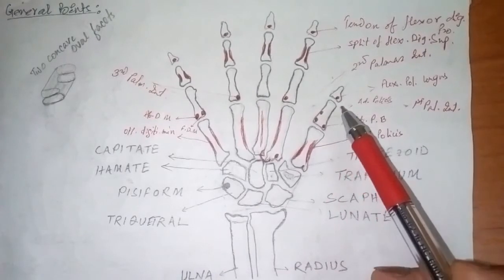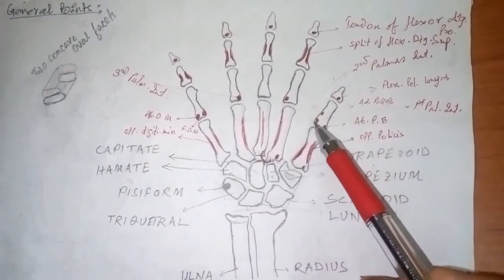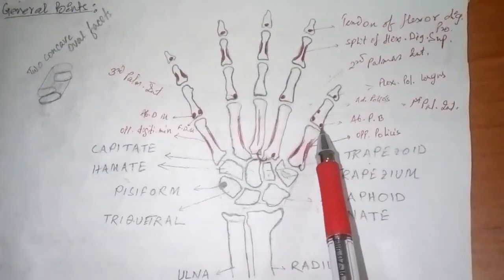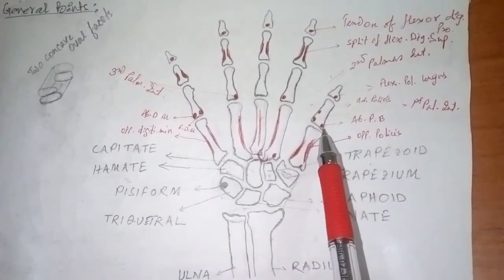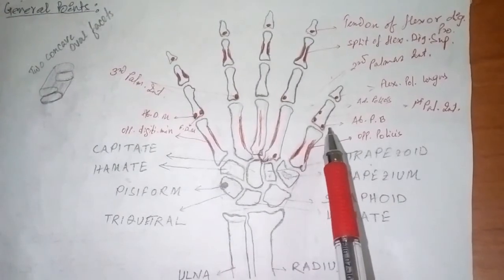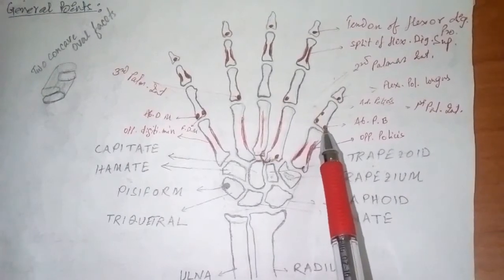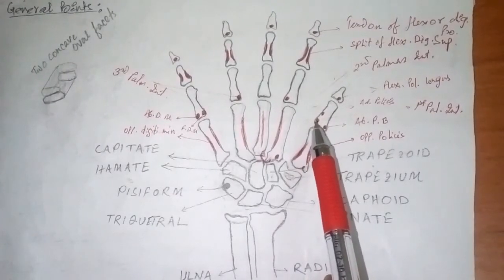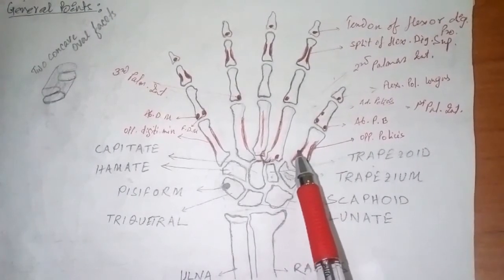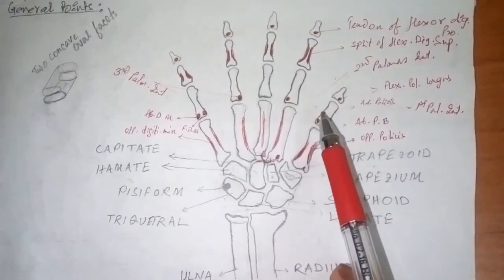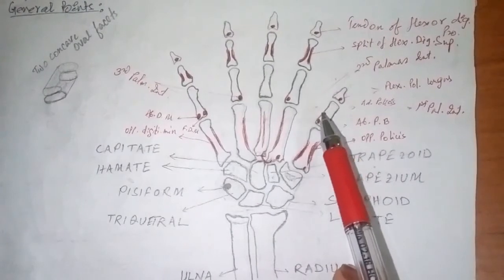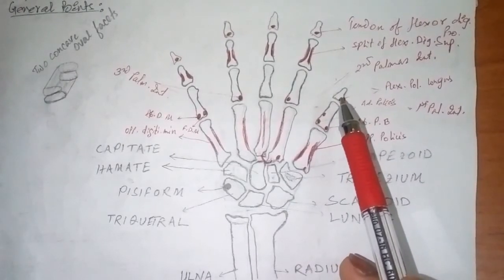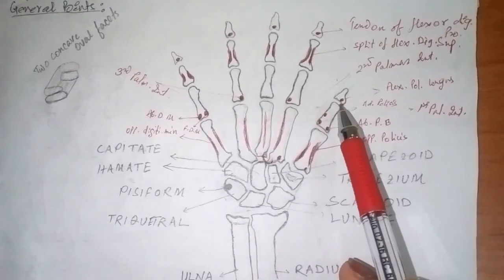Starting from the lateral side, from the thumb — the first digit — this is the proximal phalanx of the thumb. Here we see clearly that there are three important insertions. The first one on the lateral side is the abductor pollicis brevis, which abducts the thumb, inserted on the lateral side of the palmar surface of the base. On the medial side of the palmar surface of the base is the first palmar interosseous muscle, which originates from the first metacarpal bone. The third one, adductor pollicis, is inserted on the medial border of the shaft of this proximal phalanx. And the distal phalanx has the flexor pollicis longus, inserted on the palmar surface of the base of the distal phalanx.